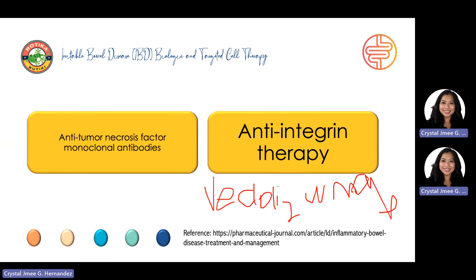Vedolizumab is licensed for use in both CD and UC for induction and maintenance therapy, and is available as IV and subcutaneous formulation. The IV dosing is 300 mg at weeks 0, 2, and 6, with 8-weekly infusions thereafter. If the patient opts for the subcutaneous formulation as maintenance therapy, it may be initiated following at least two IV infusions at weeks 0 and 2. The intravenous dose can be increased to 300 mg every four weeks to target therapeutic levels of more than 7.4 micrograms per mL if patients show loss of response. Vedolizumab is currently approved by NICE for moderate to severe active CD if anti-TNF treatment has failed or if anti-TNF agents cannot be tolerated or are contraindicated. For moderate to severe active UC, vedolizumab can be used as a first-line option.